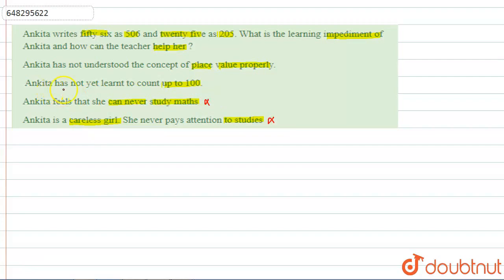Option B says Ankita has not yet learned to count up to 100. This means Ankita doesn't count up to 100. We can't consider this point. If she wrote 506 and 205, these values are greater than 100. We can see 506 and 205 are higher than 100. We won't consider this point.